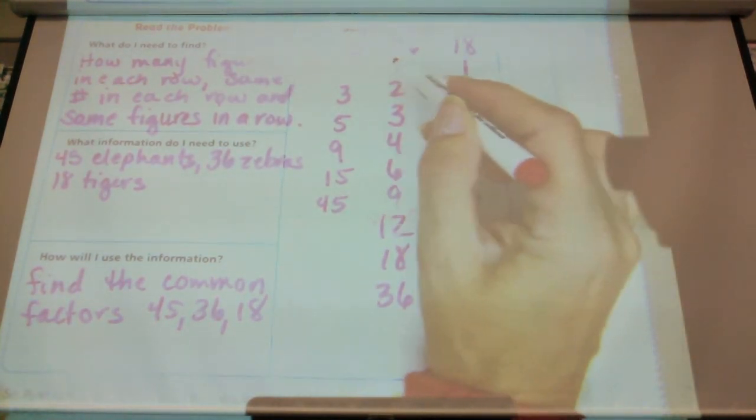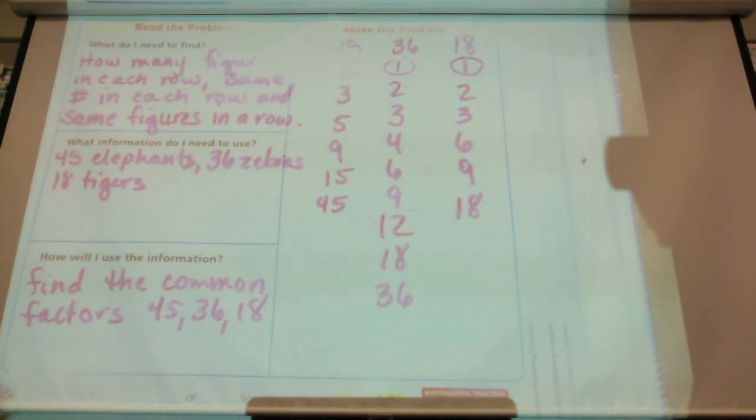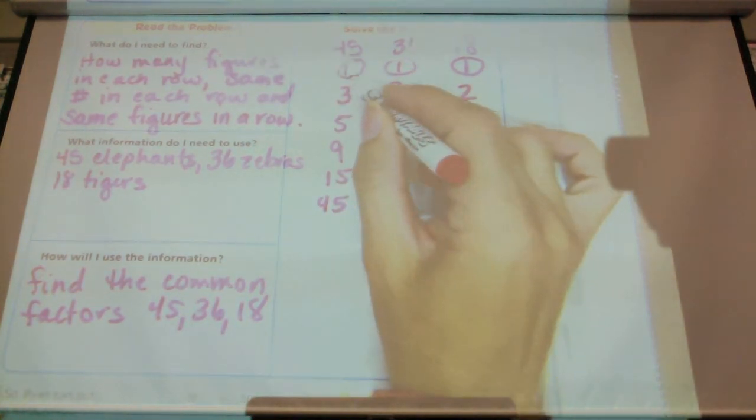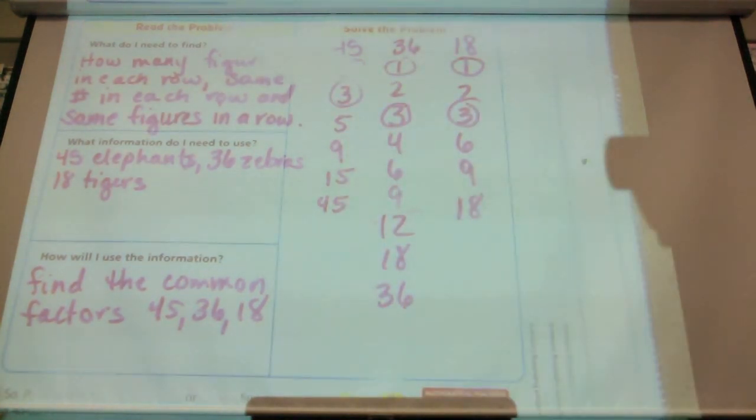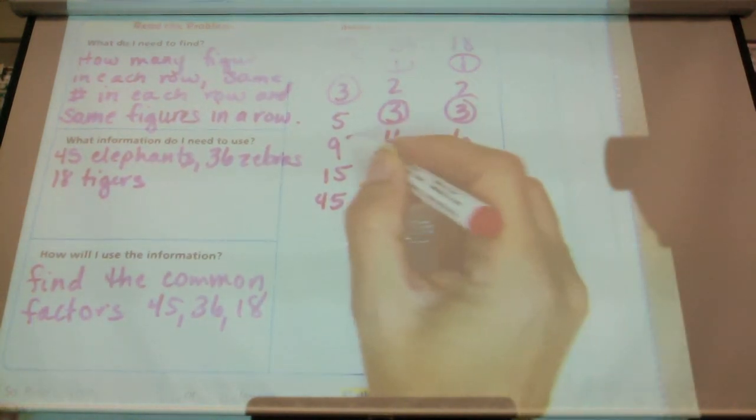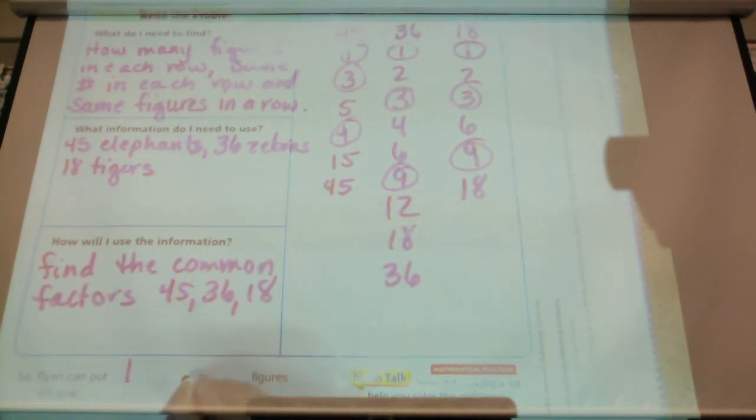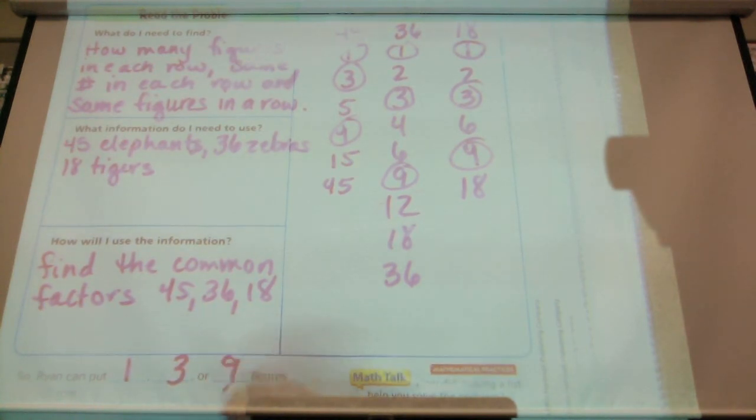Okay, first common factor class is 1. Do not answer the next question, think. What is the next common factor? 3. Okay good, 3. Okay think and look the last one. 9. Because it's also 18. Okay so the last one is 9. So we have 1, 3, or 9.